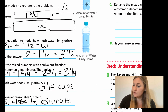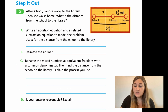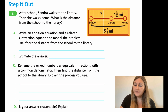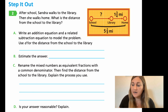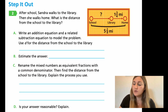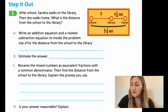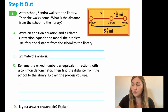Let's flip the page to 172. For number two, it says after school, Sondra walks to the library, then she walks home. What is the distance from the school to the library? Looking at the yellow rectangle on the right, there's a red circle for school and it goes to the library — we don't know that distance. We do know that the library to home is one and three fourths miles, and the school all the way to home is a total of five and two eighths miles. We're trying to find that section from school to the library.